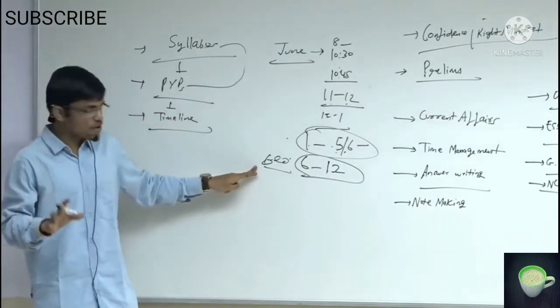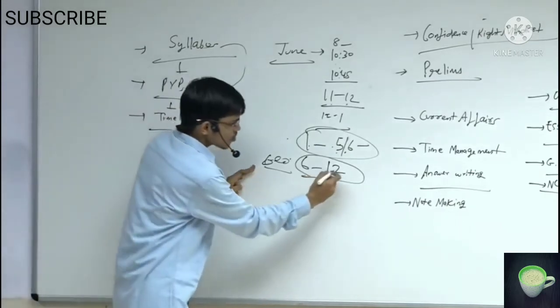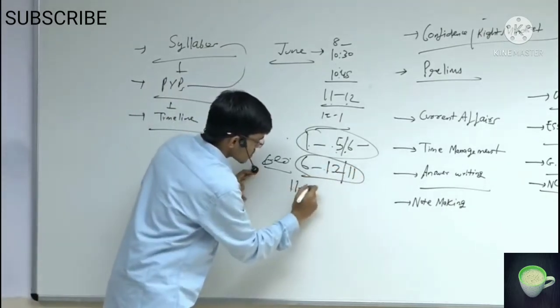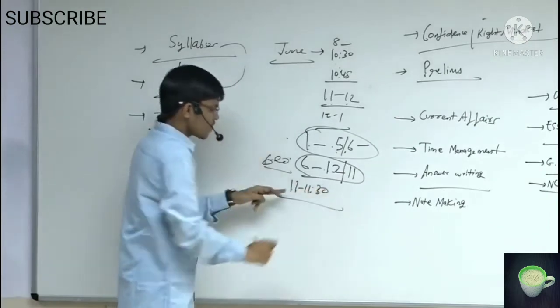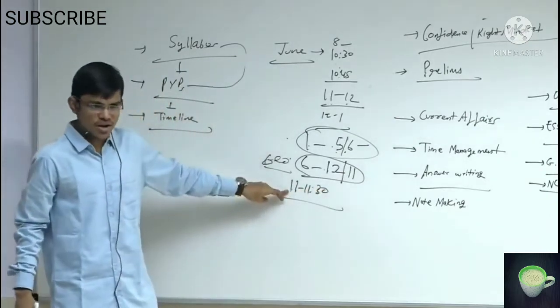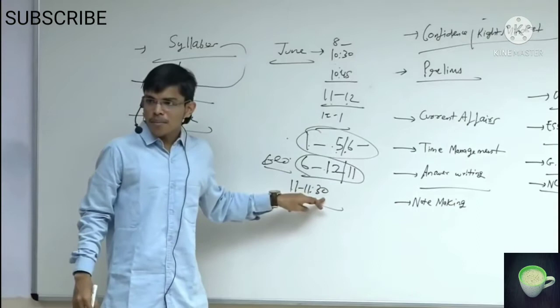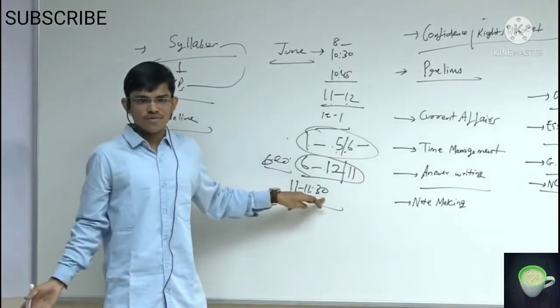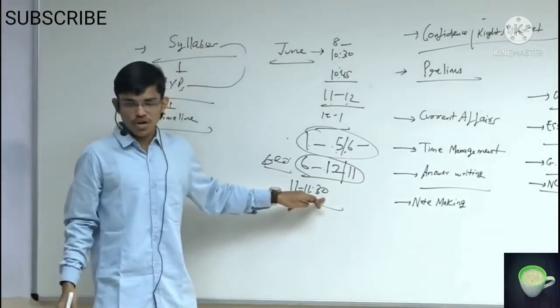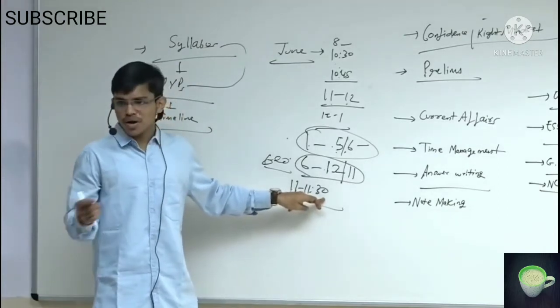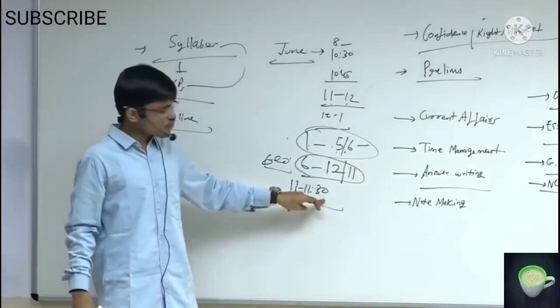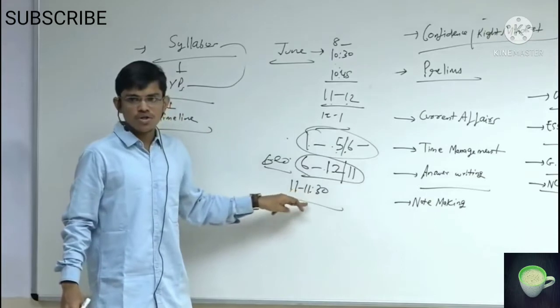Now, I am on the right track. At 6-12 to 11-11, the basic stuff for current affairs, like Insights daily current affairs, PIB followed, PRS, if there is monthly policy review, science monitor, if there is a show, down to earth, or something I follow for current stuff. I did all in the last minute, and I did note making.